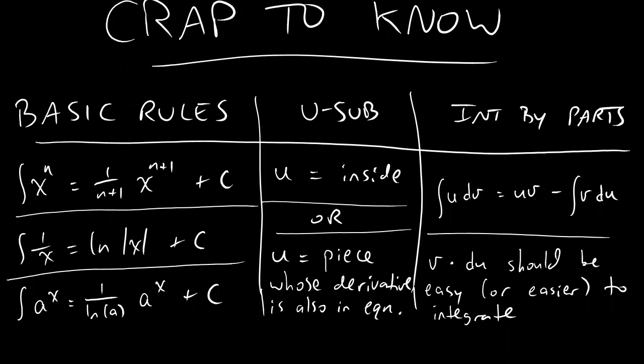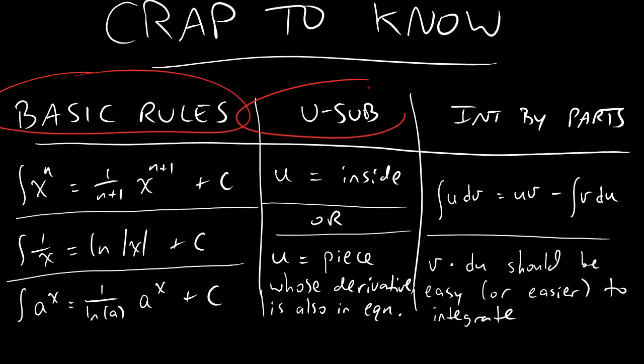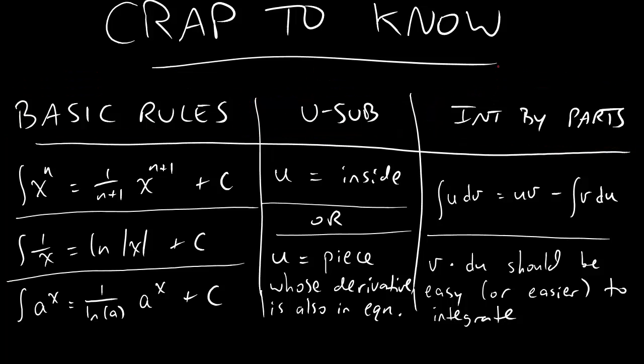So, dudes, here is the basic crap you have to know. Three different things. First, we got basic rules. Second, we got u-substitution. And third, integration by parts. These are the three categories of things you need to know, and everything underneath here is the details you need to know about them.